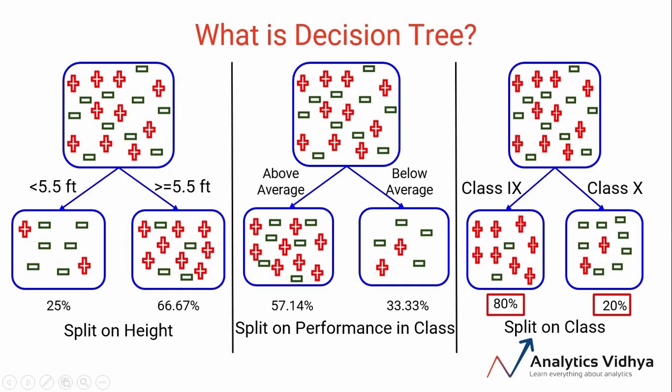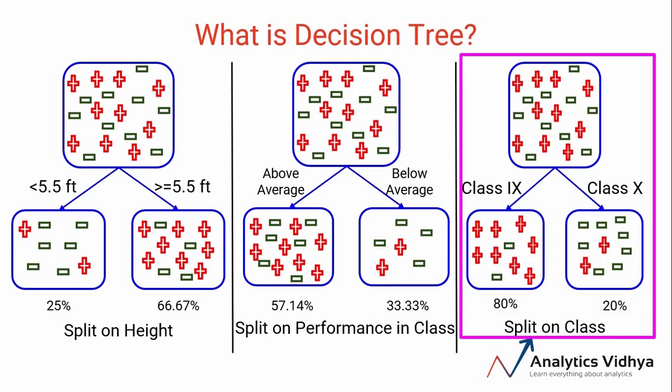If you look at the split on class here in the third decision tree that we have, it has segregated 80 percent of students who play cricket which is more than any of the other two splits. So we can say that the split on class is better than the other splits as it has produced almost pure nodes.